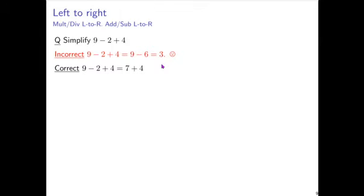So 9 minus 2 simplifies to 7. There's still the plus 4, which we account for, so 7 plus 4 simplifies to 11.